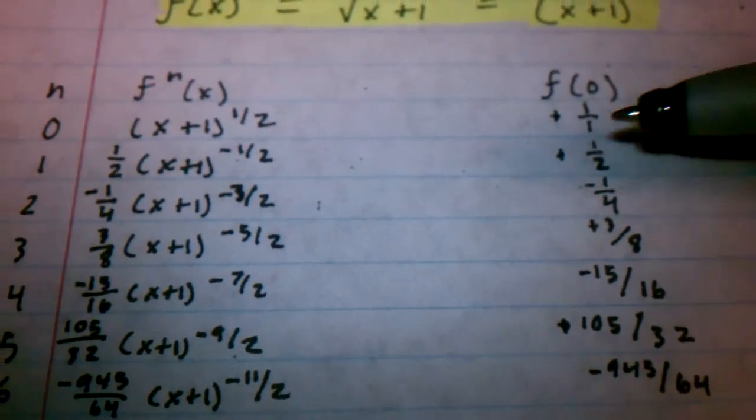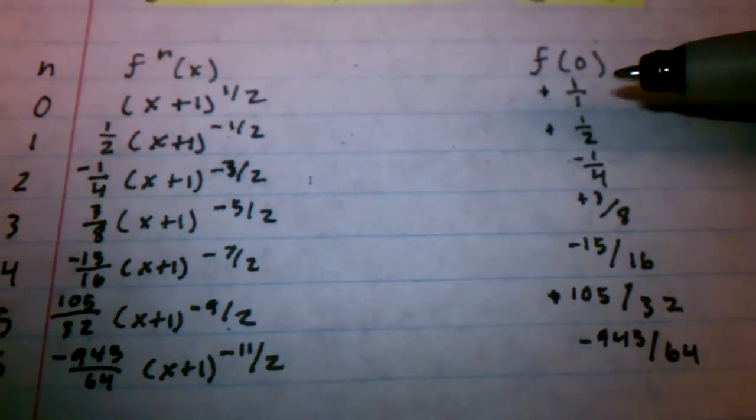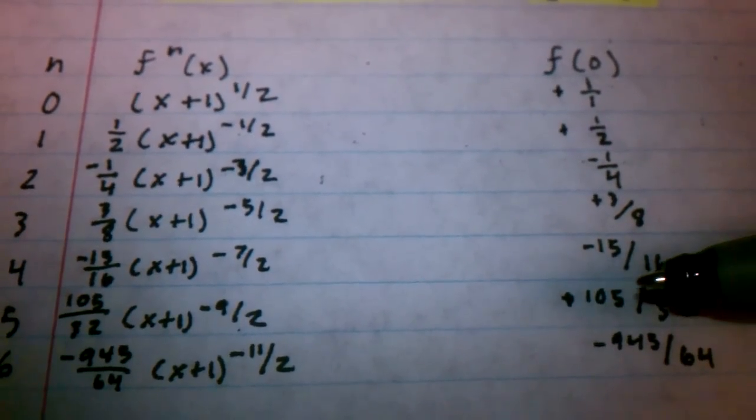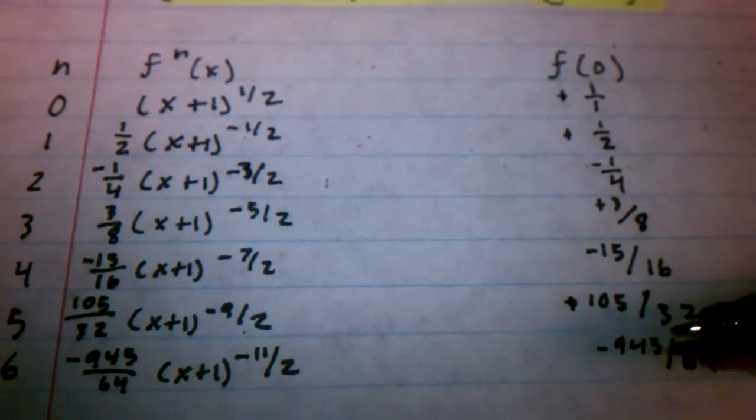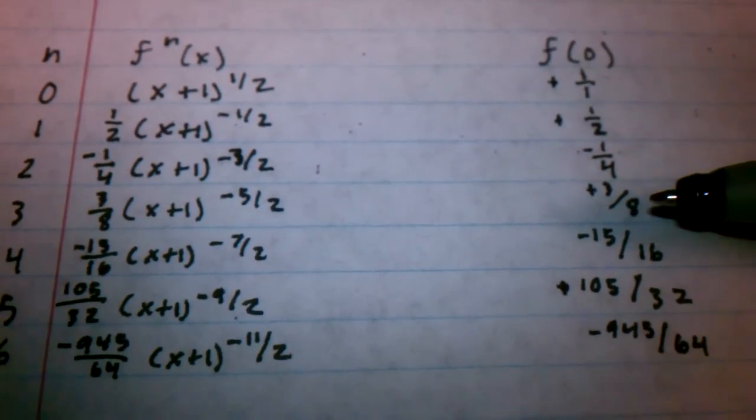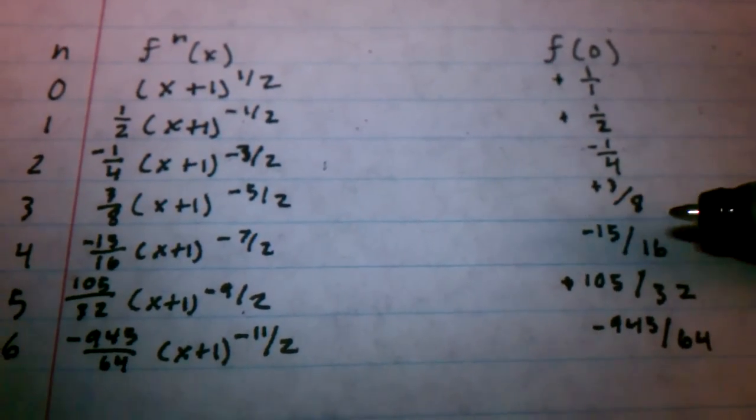Because once we take our derivatives and look at f as it's plugged in, we're going to look for a pattern. Right now, on the numerator, we should say we got 1, 1, 1, 3, 15, 105, and 945. And on the denominator, we have 2, 4, 8, 16, 32, and 64. So, we're going to try to figure out the patterns from here.